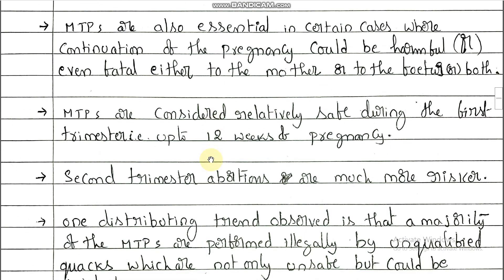MTPs are considered relatively safe during the first trimester. The complete pregnancy gestation period is divided into three trimesters: first trimester is months one to three, second is four to six, and third is seven to nine. MTPs are considered relatively safe during the first trimester — that is, up to 12 weeks of pregnancy.